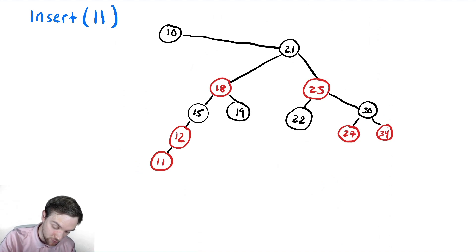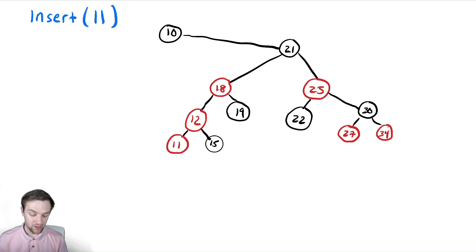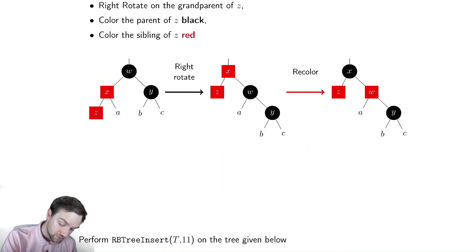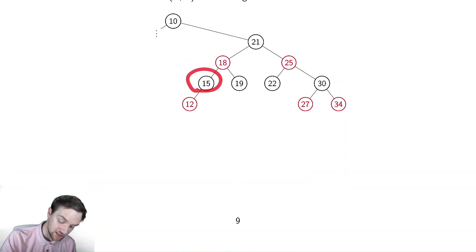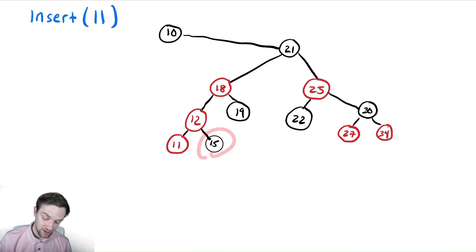Now we need to perform a right rotation. I'm going to do this by moving things around. So I need to move 15 down and move 12 up, and then 15 becomes the right child of 12. So after having performed our right rotation, let's again make sure that we did that correctly. If we scroll up, the grandparent W became the right child of the parent of Z. So 15, which was previously the grandparent of 11, is now the right child of 11.